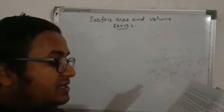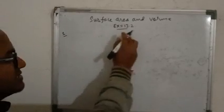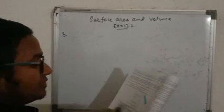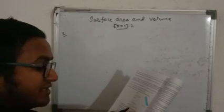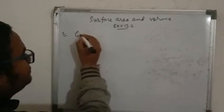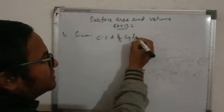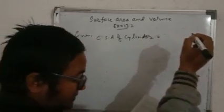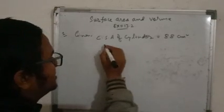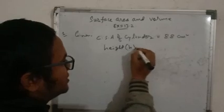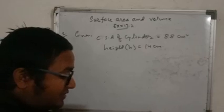Good morning everyone. Exercise 13.2, question number one from your NCERT exercise book. It is given that the curved surface area of a right circular cylinder of height 14 centimeter is 88 centimeter square. So given: CSA of cylinder = 88 cm² and height h = 14 centimeter. What is asked: find the diameter of the base of the cylinder.